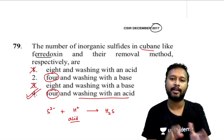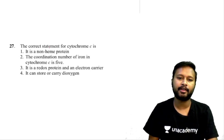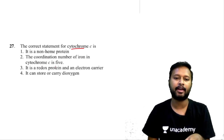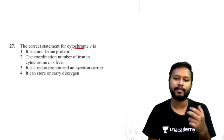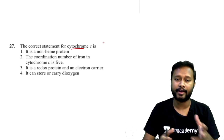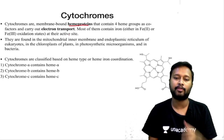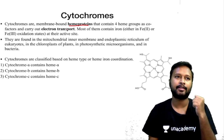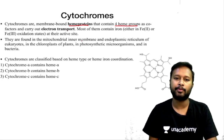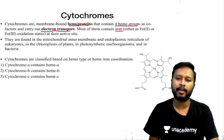Now let's move to cytochrome c. The question asks for the correct statement: (1) it is a non-heme protein, (2) coordination number of iron is five, (3) it is a redox protein and electron carrier, (4) it can store and carry oxygen. Cytochromes are membrane-bound heme proteins — they contain four heme groups as cofactors and carry out electron transport.